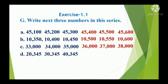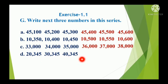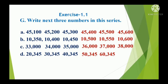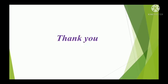For the last series starting with 20,345, the pattern increases by 10,000 each time: 30,345, 40,345, so the next numbers are 50,345, 60,345, 70,345. Hope all of you understood. Thank you, children. Bye! See you in the next video.